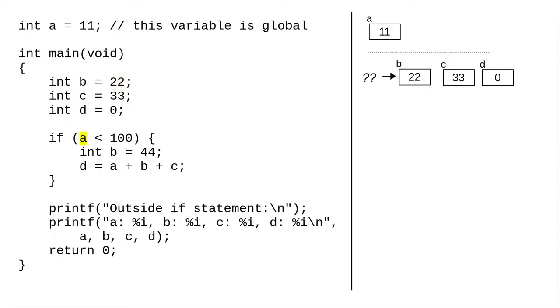What happens when the program encounters variable A in the if condition? It isn't in the current scope, and the program goes up one level of scope and finds A at the global level with the value 11.